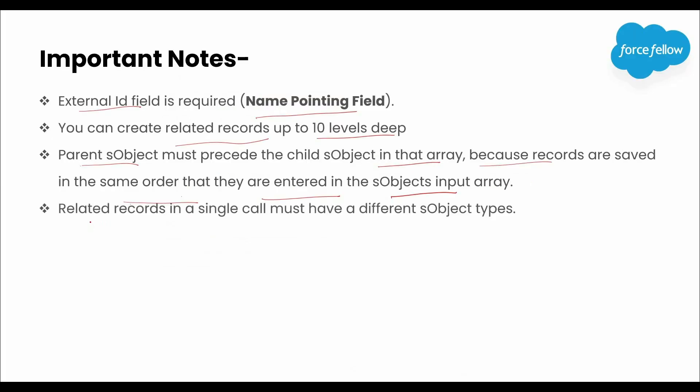The next point is: related records in a single call must have different SObject types. It means if we have parent and child records from the same SObject type, then we will get an error. For example, let's say we have a parent account field created on the account object which has a lookup relationship with the account object only — meaning it has a self-relationship. If we try to insert both an account and parent account using a single DML statement, that is not possible.